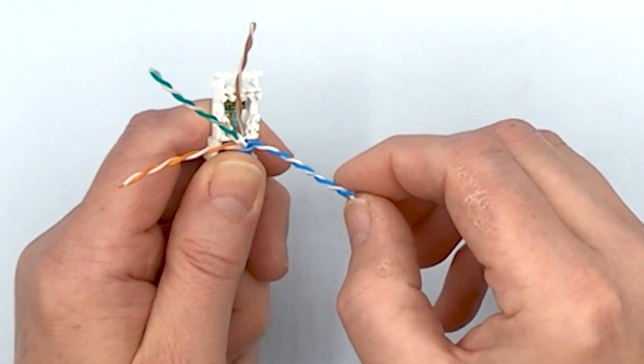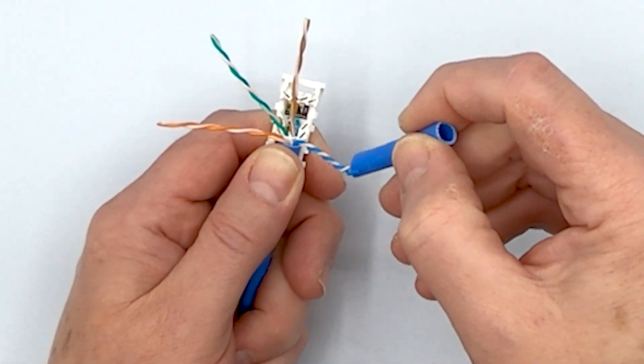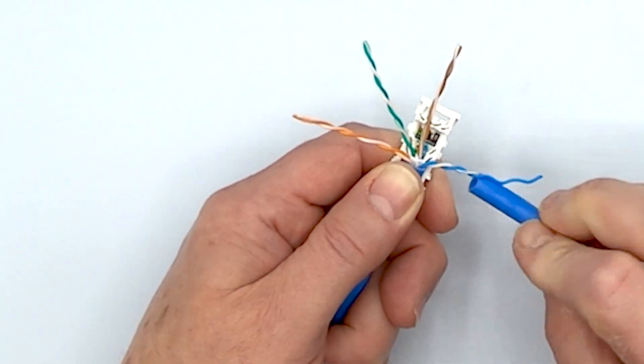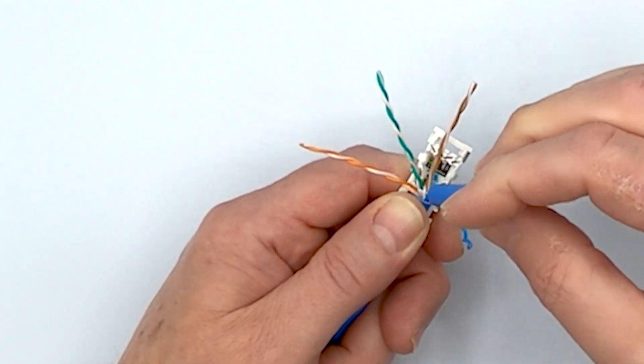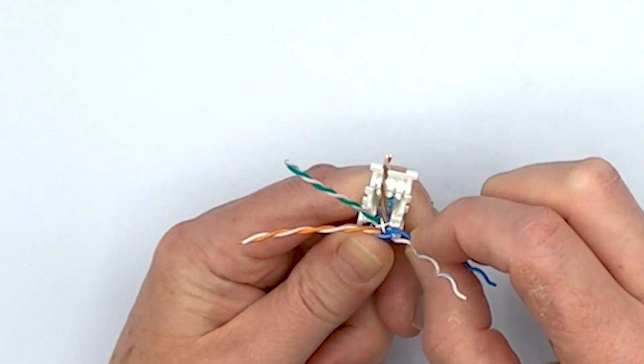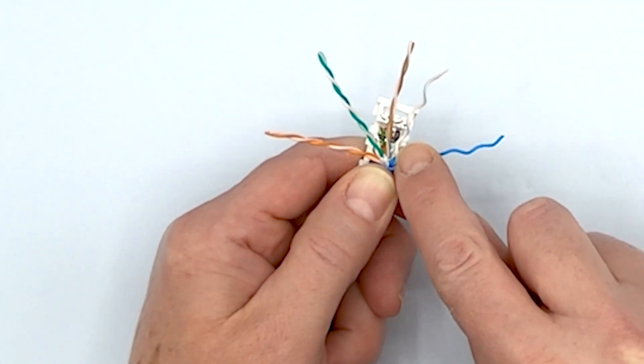You don't have to worry about untwisting it too much because it's so close to where it's going to be going into the slots. We'll just simply untwist it. I'm using a piece of cable jacket to help out. The rear conductor is going to be solid and then the front conductor will be striped.